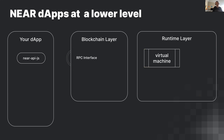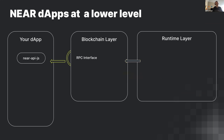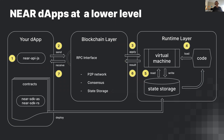The blockchain layer passes the request to the runtime layer, where a virtual machine turns on, looks at the storage on the chain, and loads your code. Your contract code may read and write to the blockchain. You only have 200 teragas — approximately 200 milliseconds — to do work in your contract. The response then goes back to your application. Every time you call a function in your contract, that full cycle happens.